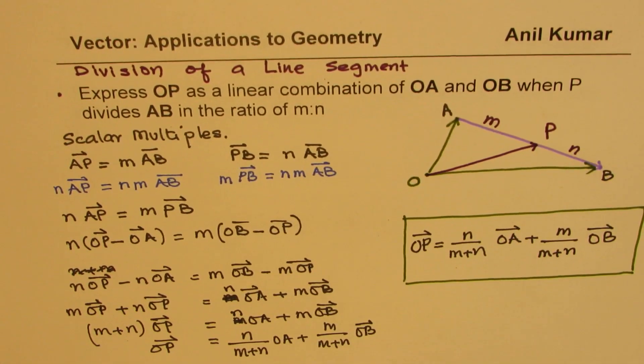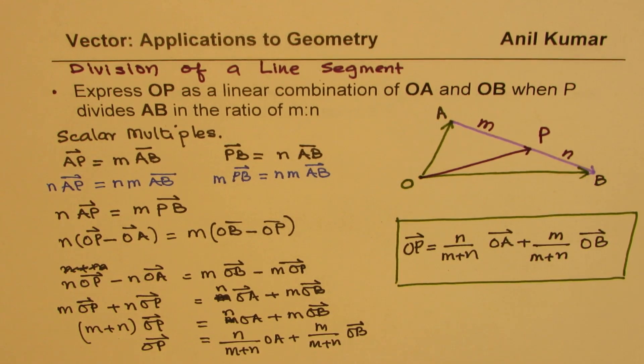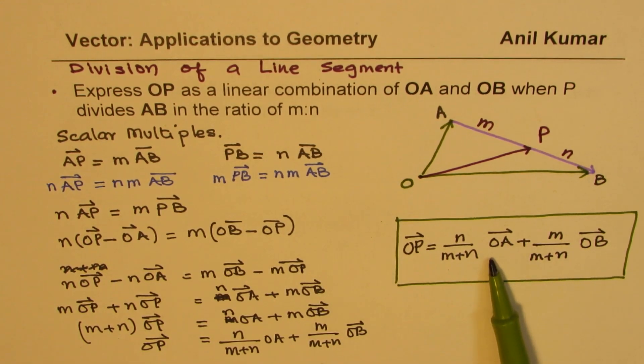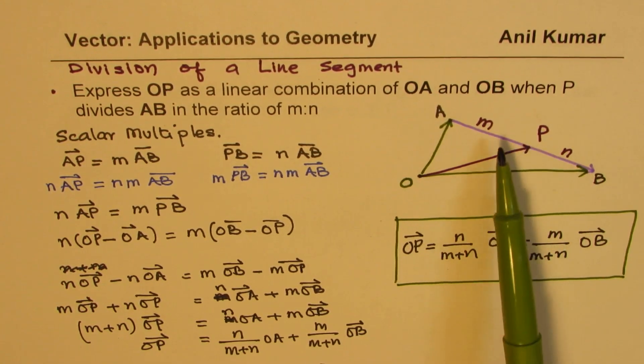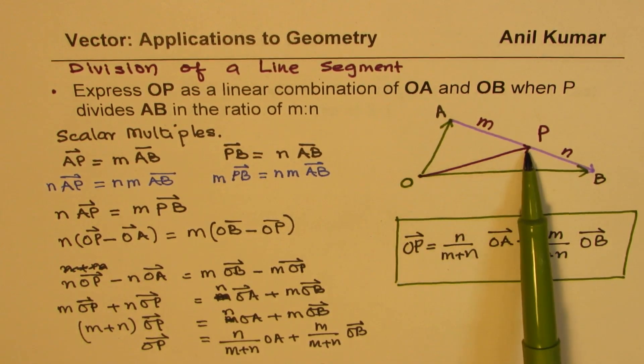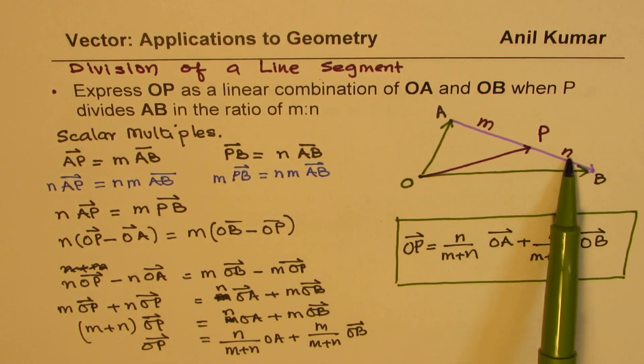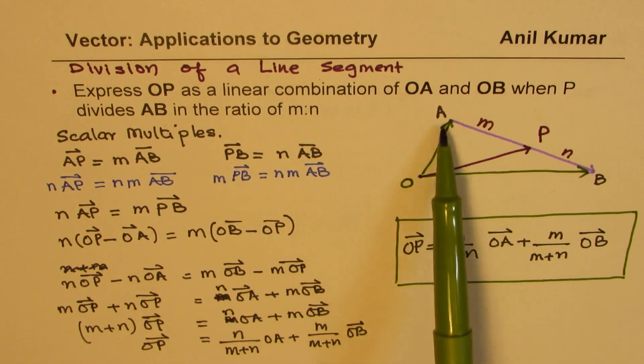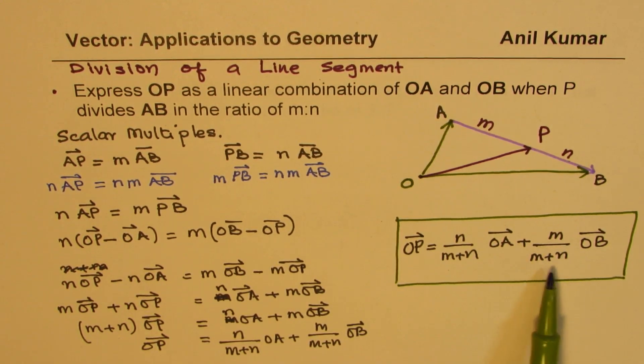This is called the section formula or division of line segment formula. If I have a line segment which is divided by a point P in the ratio of m:n, then OP is given as n/(m+n) times OA plus m/(m+n) times OB. This is a very standard formula which is always utilized whenever we talk about division of a line segment. I'd like you to make a note of this formula.